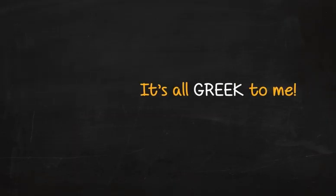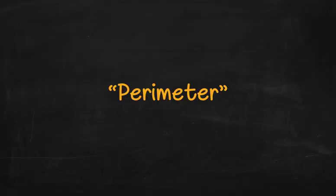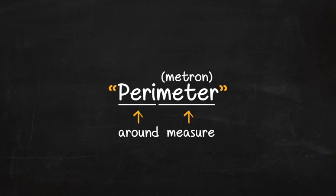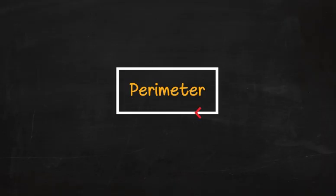It's all Greek to me, and it really is because the word perimeter comes from the Greek words peri, which means around, and metron which means measure. And that is exactly what you do when figuring out the perimeter of a shape. You measure the distance around it. You just add the length of each side to find the perimeter.